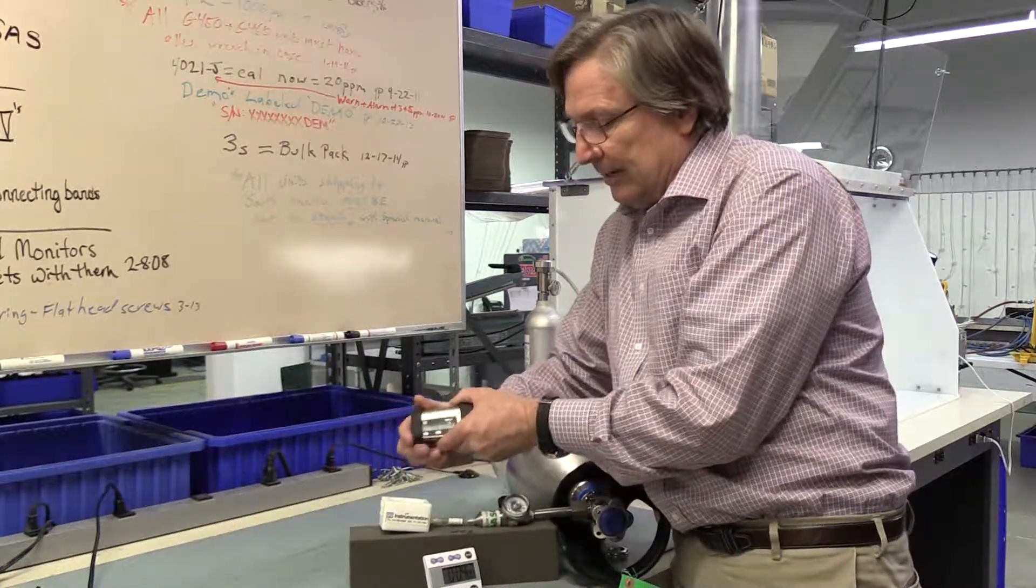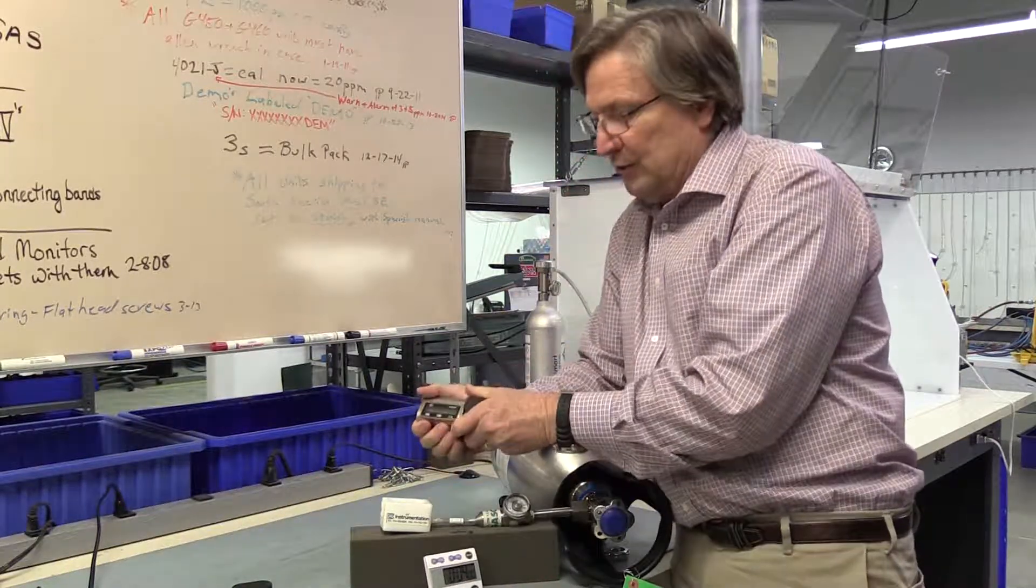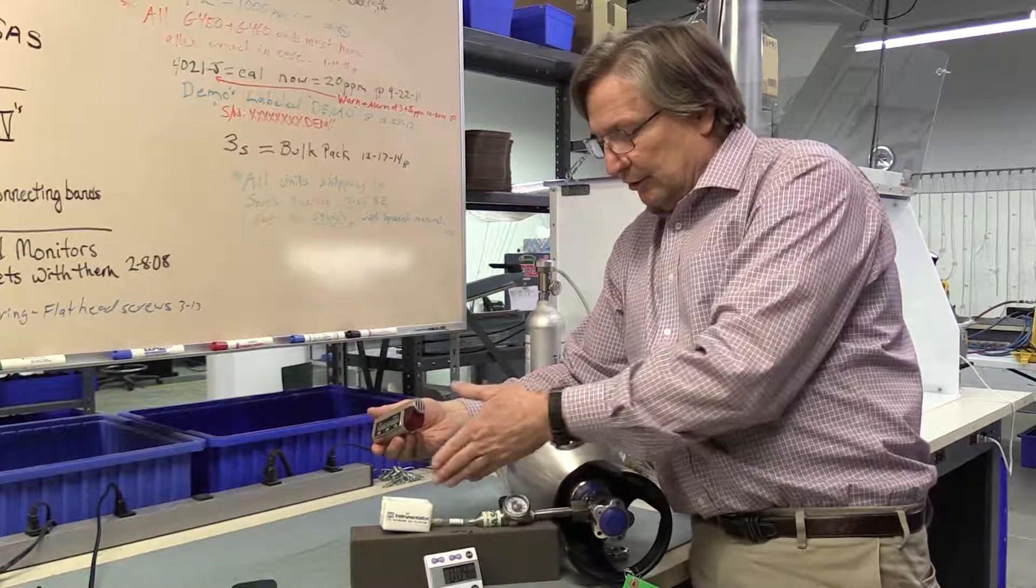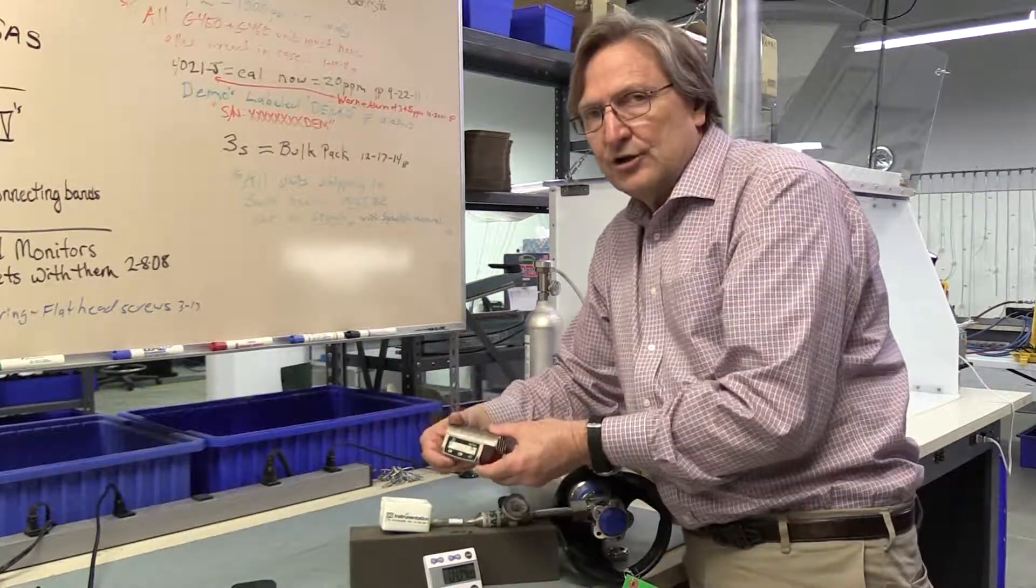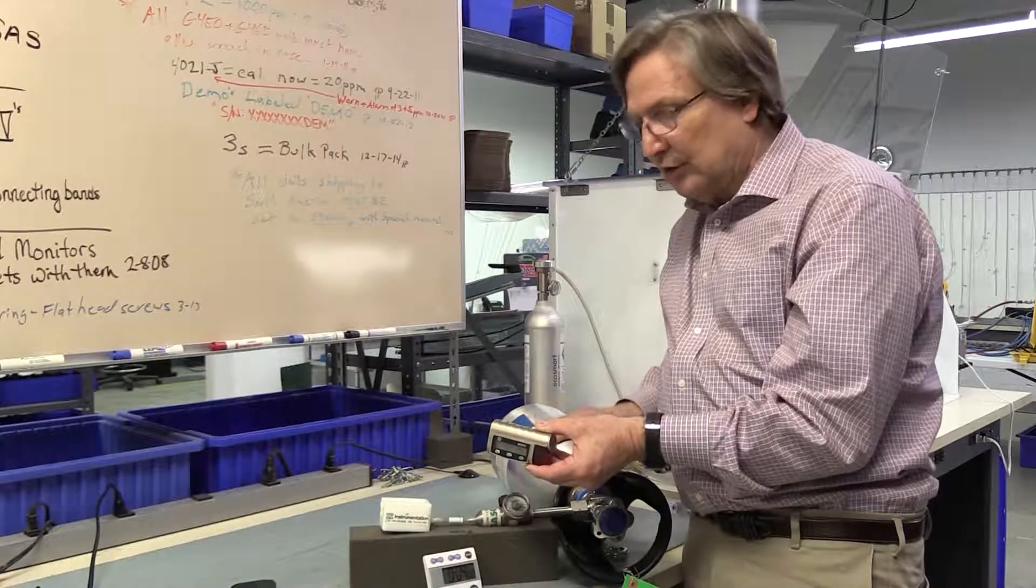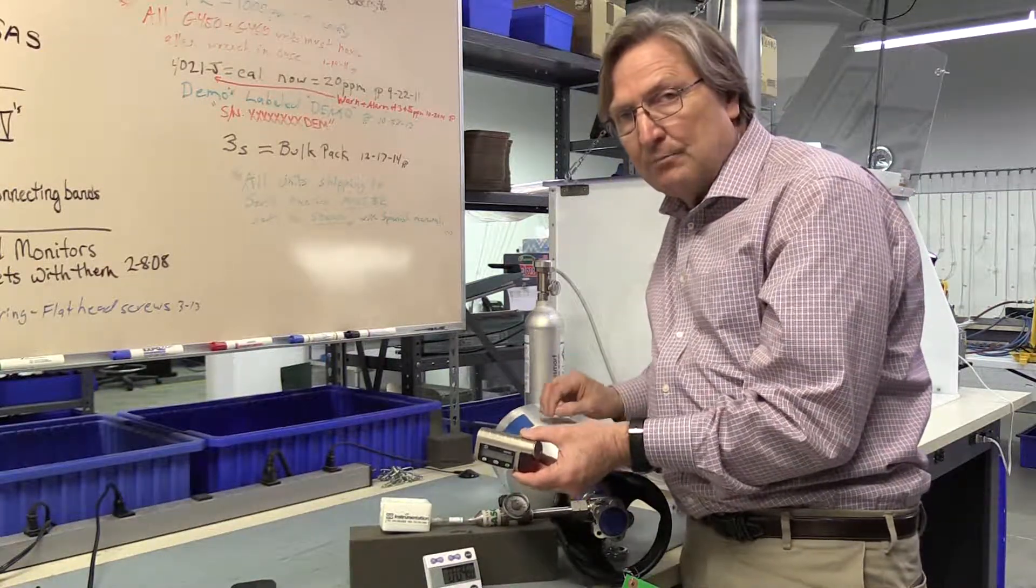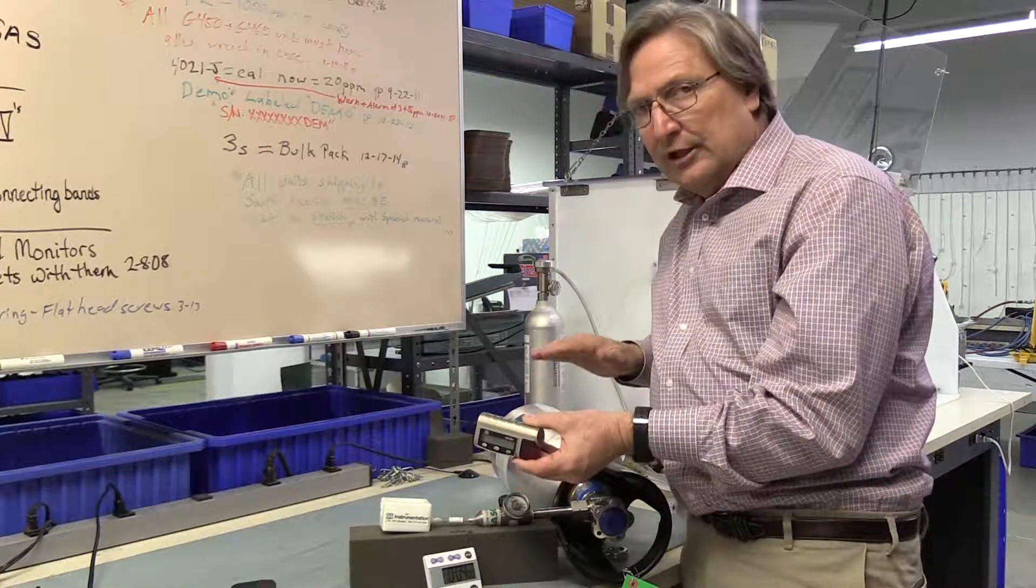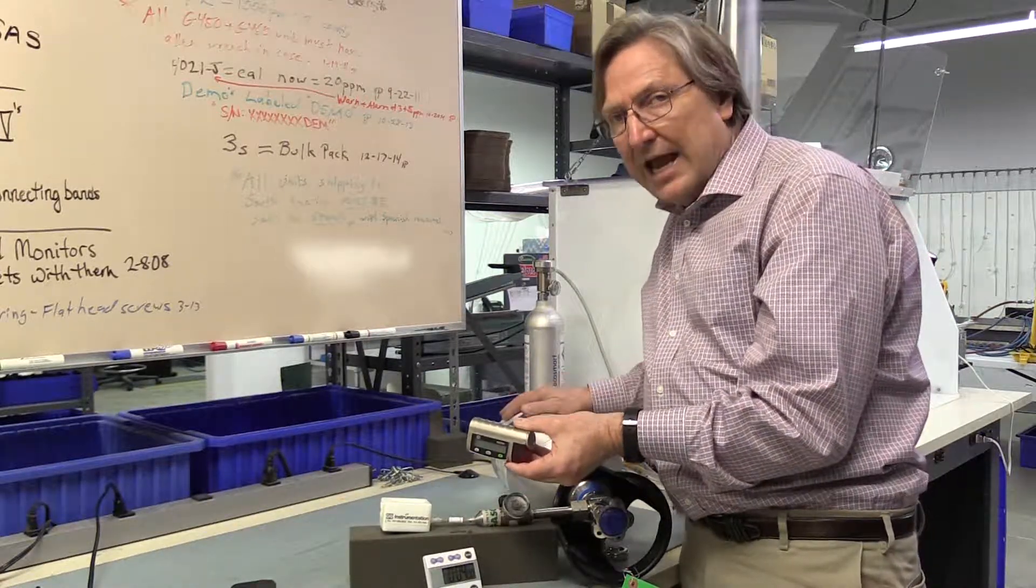So I'm going to remove the protective boots from the instrument. You'll notice that I have a cylinder of calibration gas. In this case, it's a large refillable cylinder of 10 parts per million HCL calibration gas.